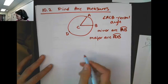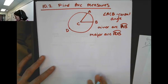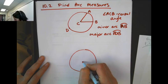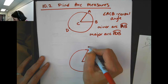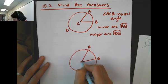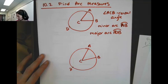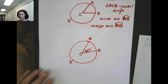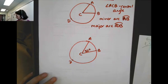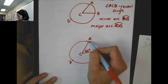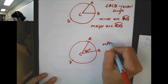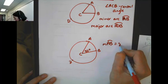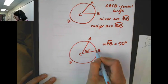Let's apply that and talk about how we actually measure an arc. If we have circle C, and if I know that the measure of angle ACB is 50 degrees, then the measure of the arc, which we write with a little m and then AB with the arc symbol, is 50 degrees.